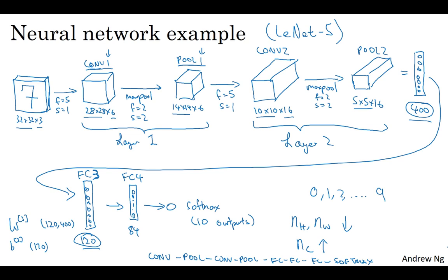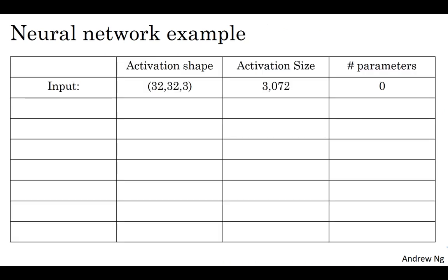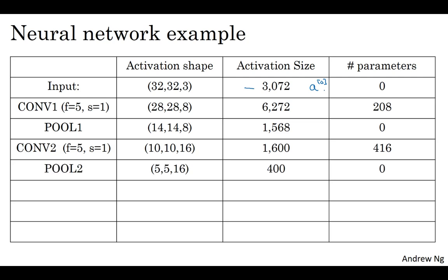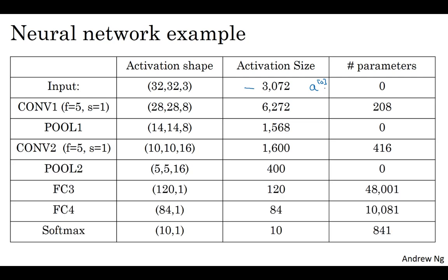So let's just go through, for this neural network, some more details of what are the activation shape, the activation size, and the number of parameters in this network. So the input was 32 by 32 by 3, and you multiply out those numbers, you should get 3072. So the activation A0 has dimension 3072. And there are no parameters in the input layer. And as you look at the different layers, feel free to work out the details yourself. These are the activation shape and the activation sizes of these different layers. So just to point out a few things. First, notice that the pooling layers, the max pooling layers, don't have any parameters.